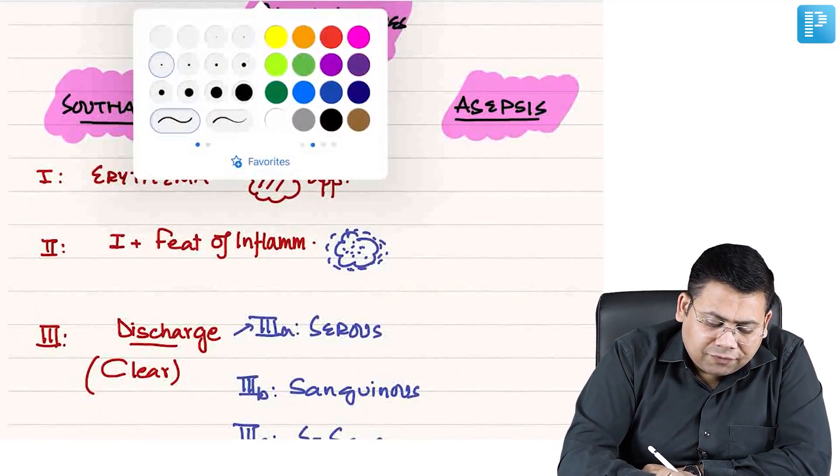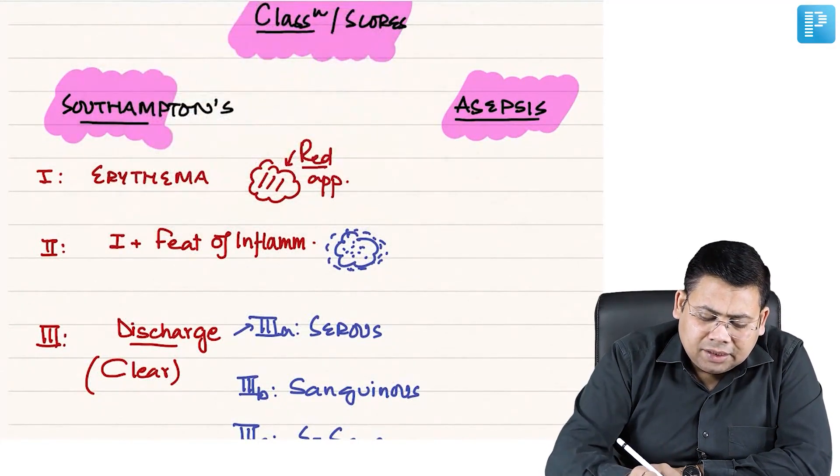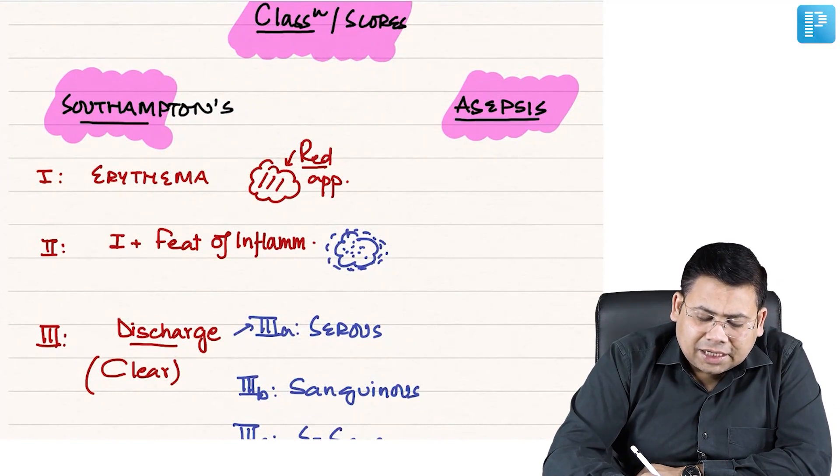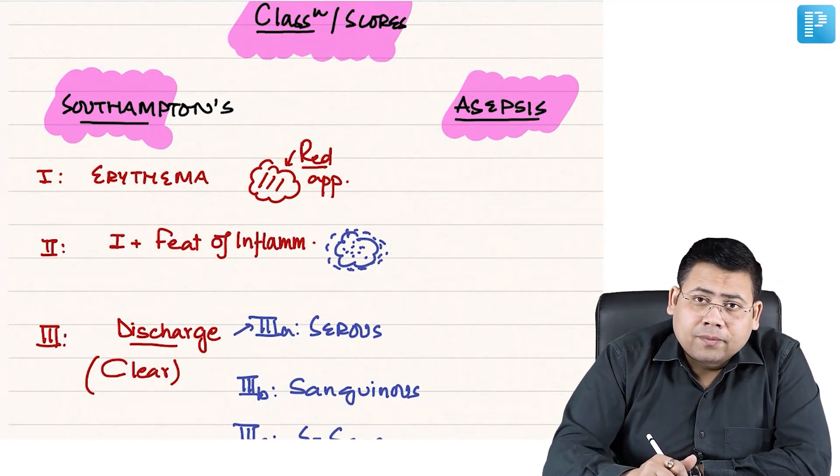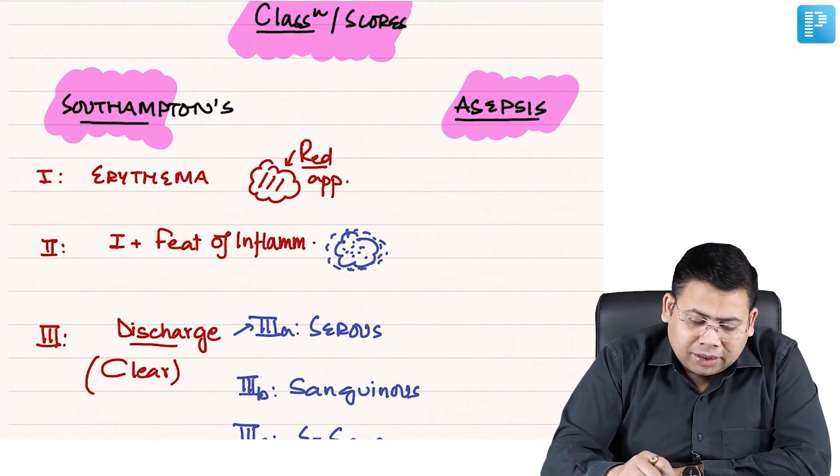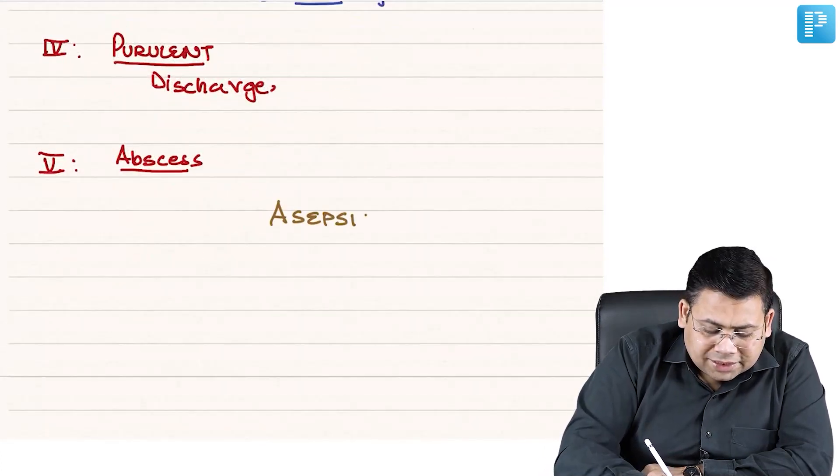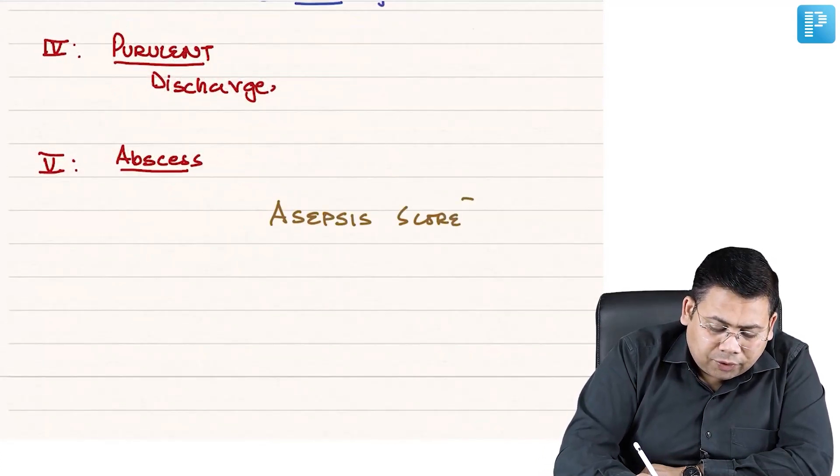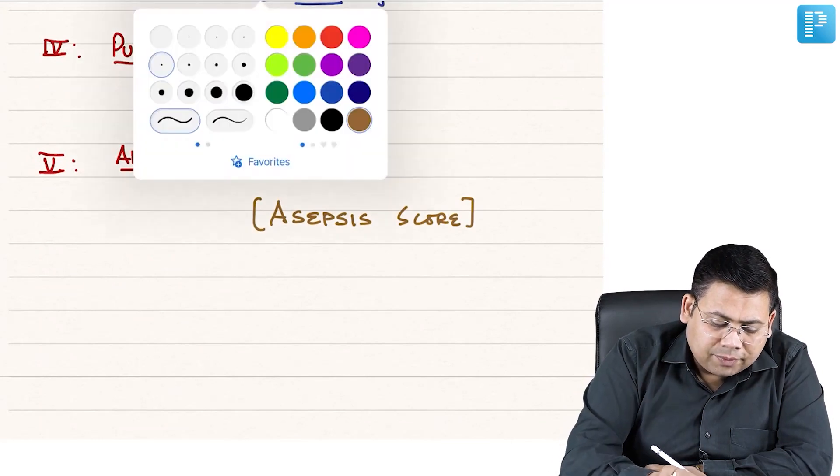When we talk about ASEPSIS, you have to be very confident. ASEPSIS itself stands for a mnemonic - the word is itself a mnemonic. Let's see this ASEPSIS. ASEPSIS score is a point-based scoring system.